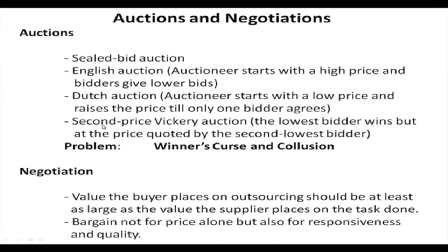The second price Vickery auction addresses the winner's curse: the lowest bidder wins but pays the price quoted by the second lowest bidder, not their own bid. Another problem that occurs during auctions is collusion among bidders. There are several mechanisms to address collusion, though time is insufficient to discuss them all — these are different ways through which auctions can take place.